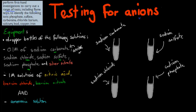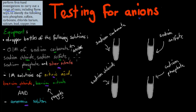You're also going to have a solution of silver nitrate, nitric acid, barium chloride, barium nitrate, and ammonia solution. The ones underlined in purple are your reagents — these are the ones you're going to do your tests with. In terms of your tests, you're going to have four test tubes containing your solutions: sodium carbonate, sodium sulfate, sodium chloride, and sodium phosphate. These are your actual anion solutions.